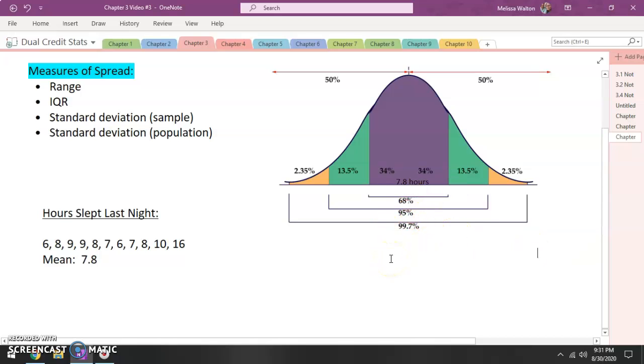Now according to the empirical rule, we would expect about 68 percent to be within one standard deviation, 95 percent of all values to be within two standard deviations, and then three standard deviations, that is 99.7 percent of values should be within three standard deviations. But how do we calculate a standard deviation?